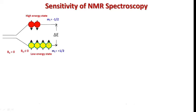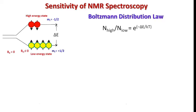The population difference between the low and the high energy state can be calculated by the well-known Boltzmann distribution law. According to this law, the number of nuclei that are present in the high energy state to number of nuclei that are present in the low energy state is equal to exponential of minus ΔE upon kT.